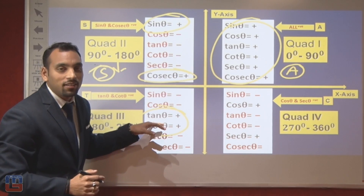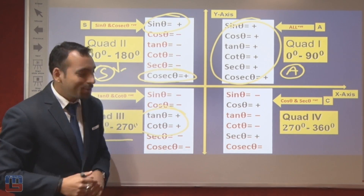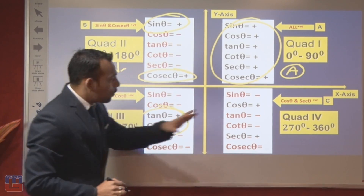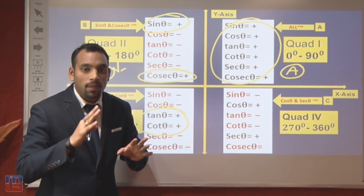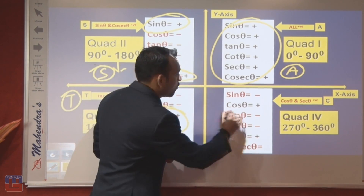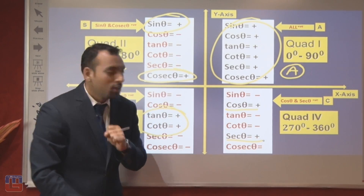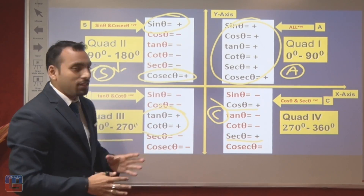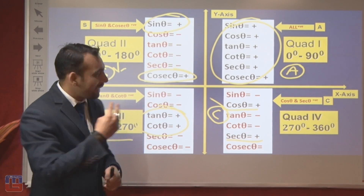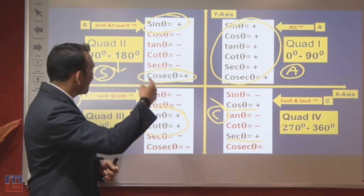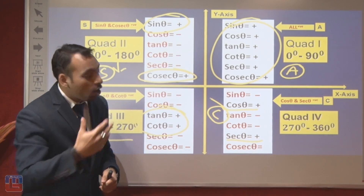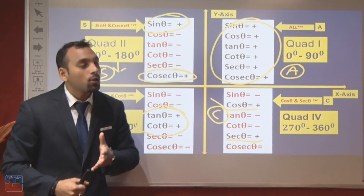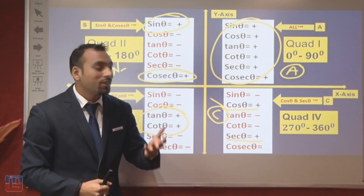In the third quadrant, tan θ and cot θ are positive — we call this 'T'. In the fourth quadrant, cos θ and sec θ are positive — we call this 'C'. So the rule is: A, S, T, C. You can remember this as 'All Students Take Coffee' — a very useful mnemonic.